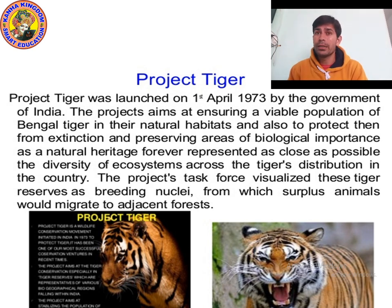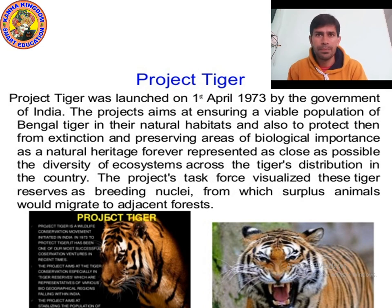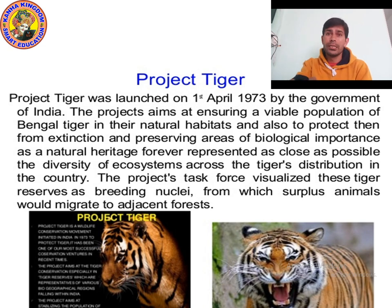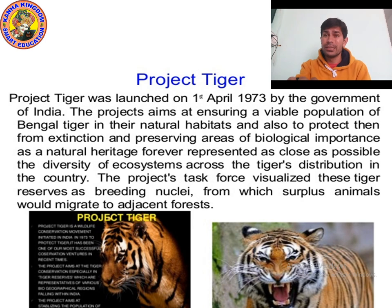National parks are areas reserved for wildlife where they can freely use their habitats and natural resources. Satpura National Park is the first reserve forest in India. Last time I gave you the question to write the names of any three national parks — Satpura is the national park which is the first reserve forest in India.